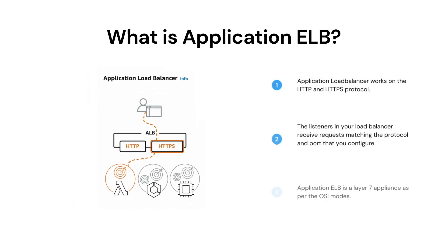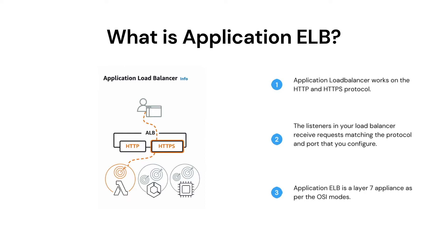Next question: What is Application load balancer? Application load balancer operates at the request level, that is Layer 7, routing traffic to targets like EC2 instances, containers, IP addresses, and Lambda functions, based on the content of the request. It is ideal for advanced load balancing of HTTP and HTTPS traffic. Application load balancer provides advanced request routing targeted at delivery of modern application architectures, including microservices and container-based applications. It also simplifies and improves the security of your application by ensuring that the latest SSL/TLS ciphers and protocols are used at all times.